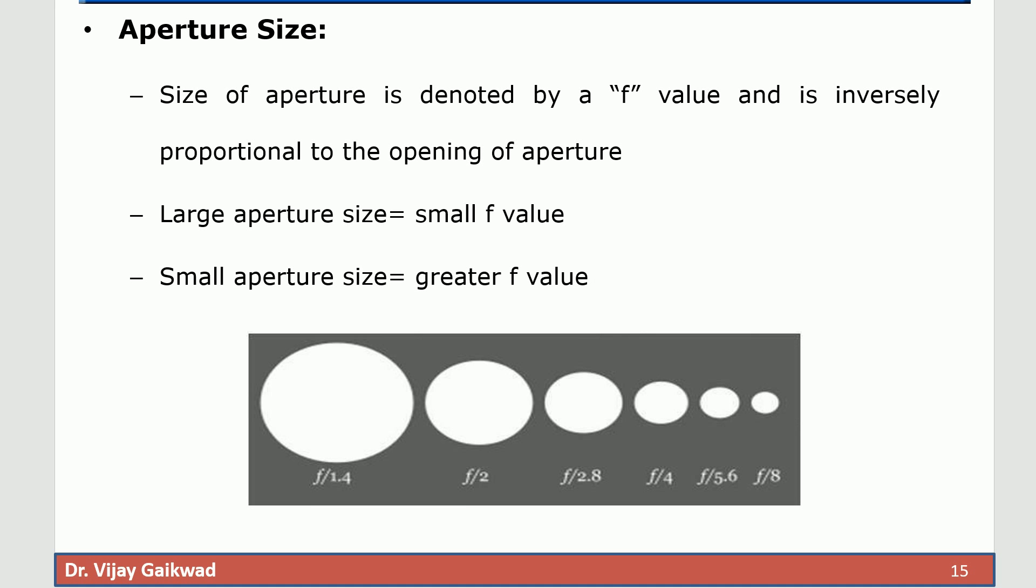Aperture being the important concept in digital camera, the size of aperture is denoted by f value and it is inversely proportional to the opening of aperture. If large aperture size is considered that will result in small f value. Generally the values are mentioned as f upon the number. Small aperture size provides greater f value. As you can see in the following image this is the aperture size of 1.4. The next image is aperture size of 2. If the value is increased the aperture size will decrease.